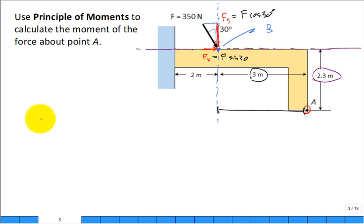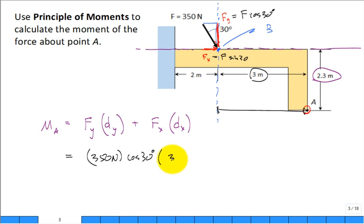So what we do is we would say the moment about point A would be the sum. And here I'm going to write it as Fy, that component, times, let's say, d with respect to the y. You know, it's some moment arm distance plus Fx times dx. Okay. For this case, I have to pay attention to the signs, but this is 350 newton times the cosine of 30 degrees times the distance of 3 meters.